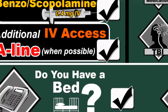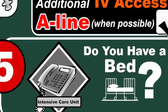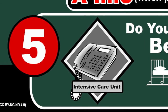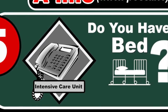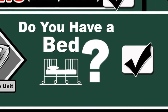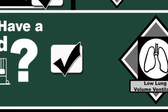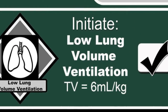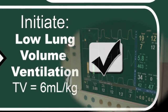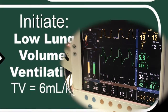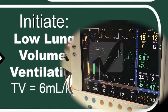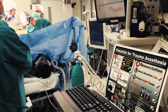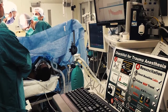Section five corresponds to the essential steps for the post-operative plan, including contacting the intensive care unit and initiating low lung volume ventilation with tidal volumes of 6 milliliters per kilogram ideal body weight.